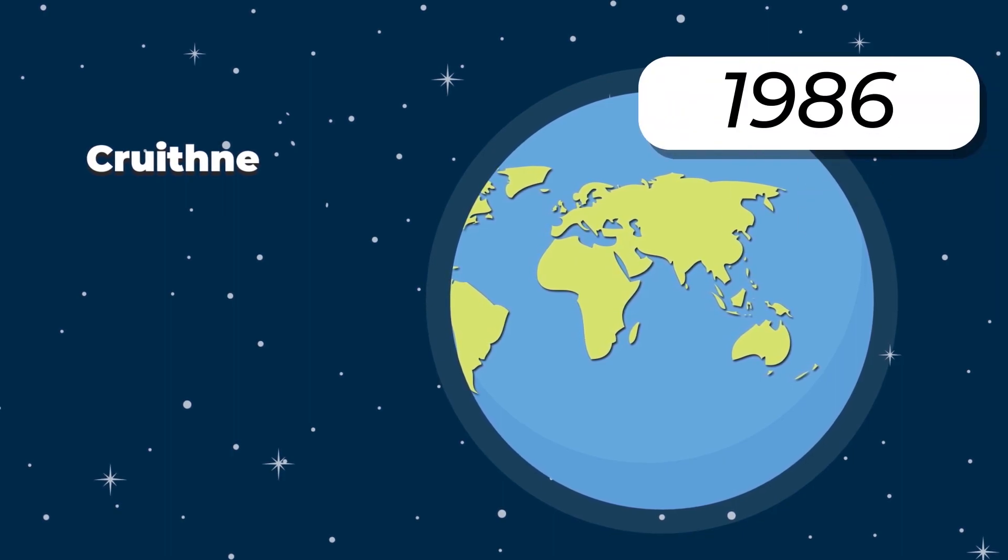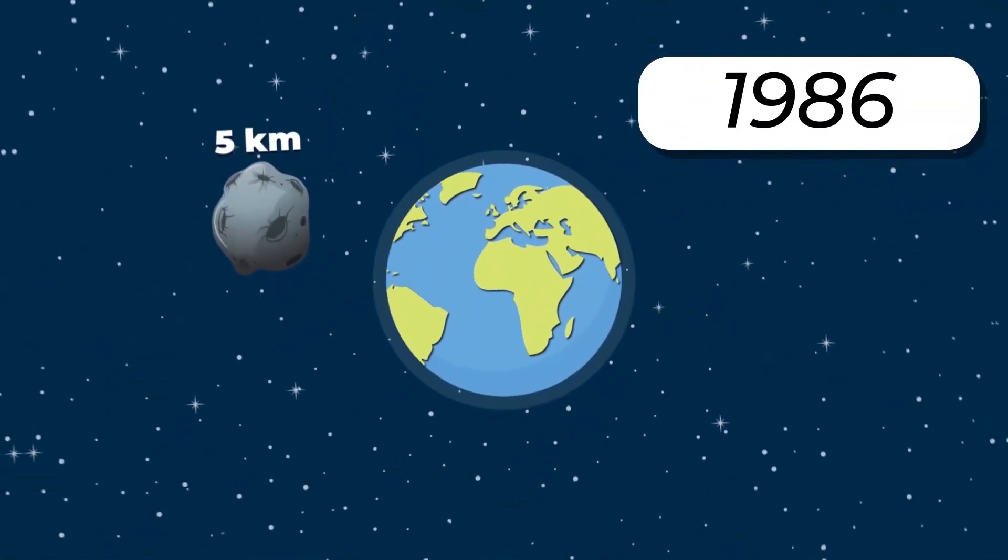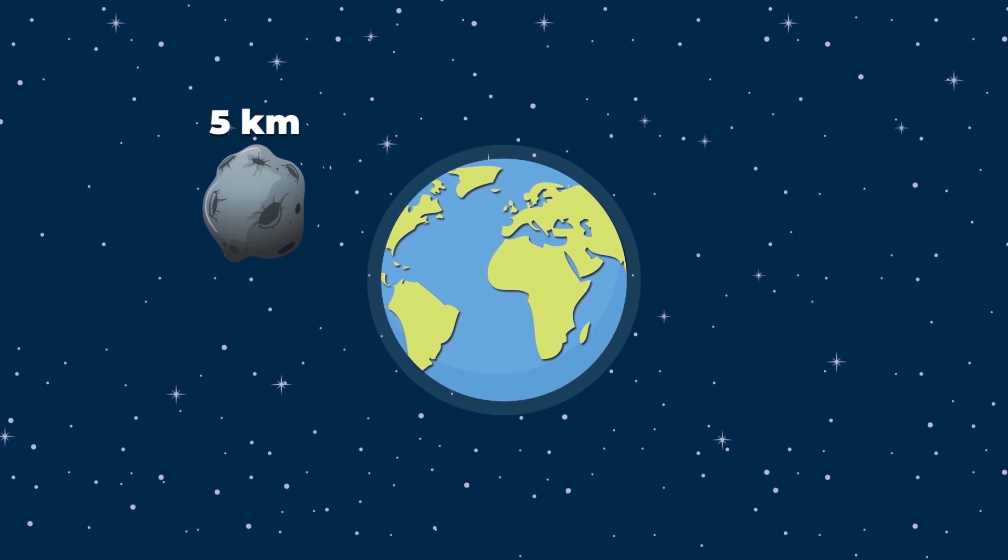The latter was first discovered back in 1986. Sounds astounding, but it is in fact an asteroid about 3 miles, or 5 kilometers, wide. It revolves around the Sun, simultaneously crossing the orbits of the following three planets: Venus, Earth, and Mars. At the same time, it spends a lot of time near our planet, making a full circle in its orbit over 364 Earth days, which is why it is considered its quasi-satellite. And yet, it definitely cannot fully replace the Moon.